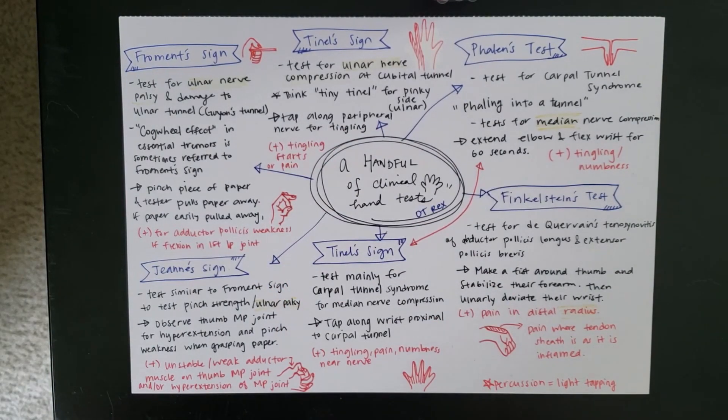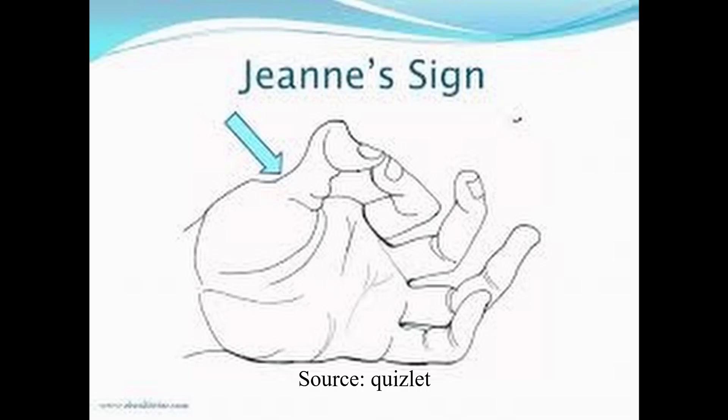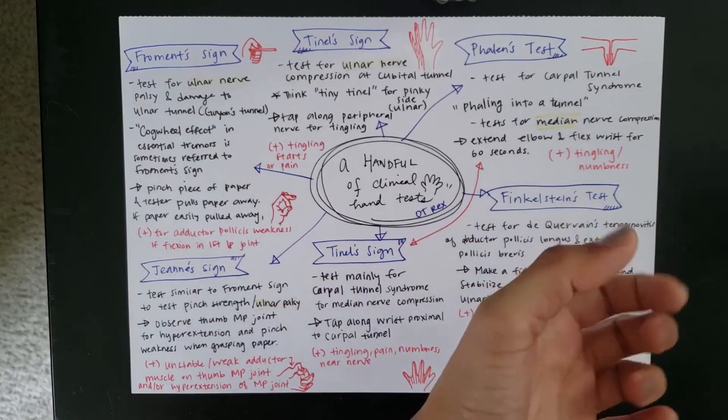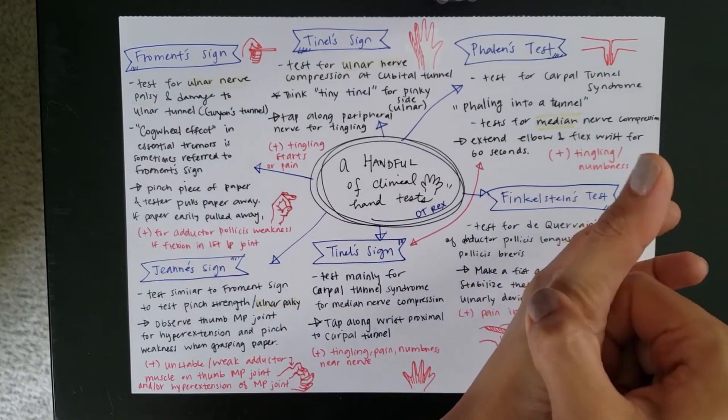So, this is very similar to the Jeanne sign, but the Jeanne sign is also looking at your pinching strength and for ulnar palsy. But the main difference for the Jeanne sign is that we are observing the MP joint of the thumb for hyperextension. And that is going to cause pinch weakness when you're grasping paper. So, the test for Jeanne sign is exactly the same as the Froment's with the paper pulling.